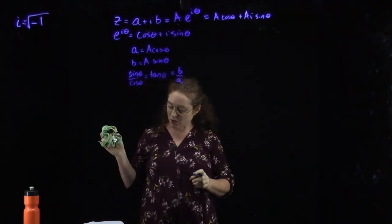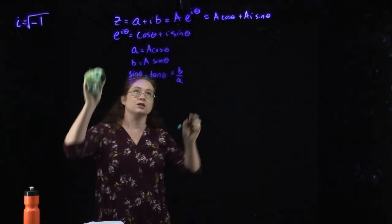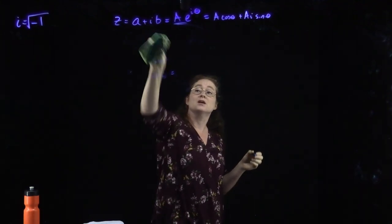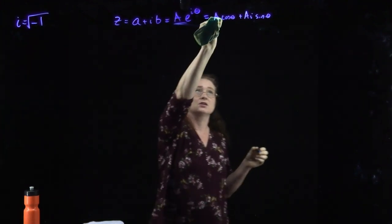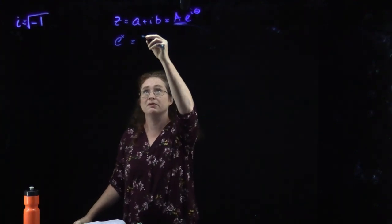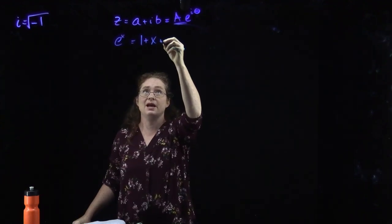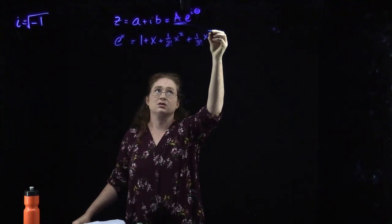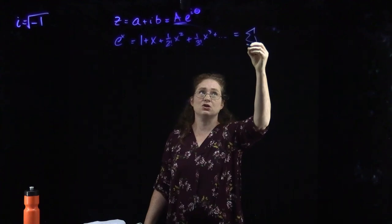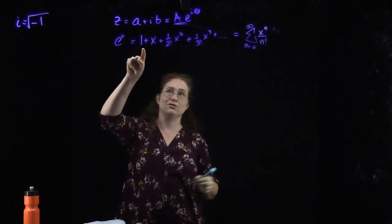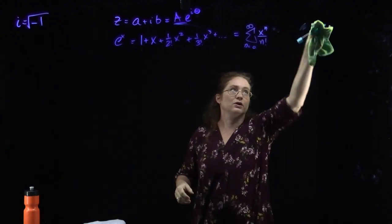To understand this, we can use Taylor series. We're going to look at what the Taylor series of e to the i theta is. For e to the x, the derivative is always equal to itself. So when we write the Taylor series, it is 1 plus x plus 1 over 2 factorial x squared plus 1 over 3 factorial x cubed and so on. We can write it in summation notation as the sum from n equals 0 to infinity of x to the n divided by n factorial, where 0 factorial is equal to 1.